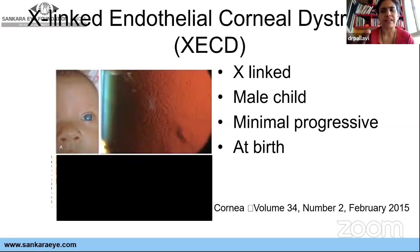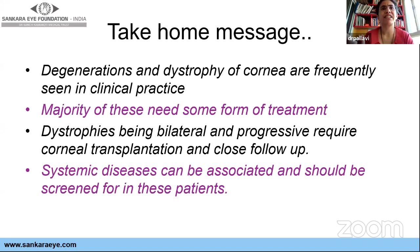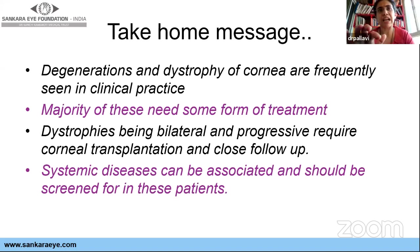To summarize: corneal degenerations and dystrophies are very frequent in clinical practice — we often overlook and fail to connect them. The majority of these patients need some form of treatment, whether lubricants, surface treatments, or more definitive surgical options. The main problem is recurrence. Dystrophies, being bilateral and progressive, require corneal transplant in about 60% of cases, with challenges of bilateral surgeries and close follow-up. Most importantly, systemic diseases are associated with both degenerations and dystrophies — always screen patients accordingly.